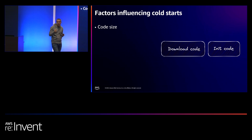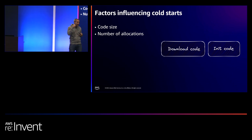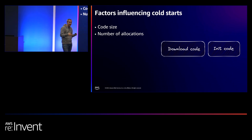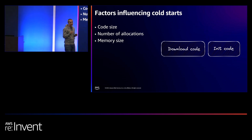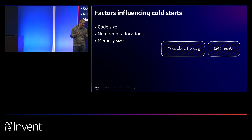Let's look at factors influencing cold starts. Code size: the bigger your code size, the longer the cold start. Number of allocations: if you're allocating a lot of temporary memory or doing a lot of thread pooling, the more allocations you have the longer the cold start, because there's a lot of IO and CPU-intensive work. Memory size: AWS states that memory size impacts the number of vCPUs your Lambda function has — for 128 MB you get 2 vCPUs, and more memory increases vCPUs. Does this impact cold start? We'll see in the benchmark results.